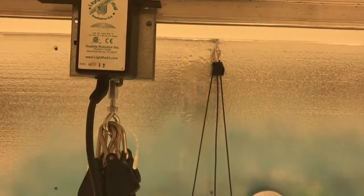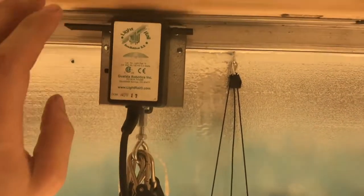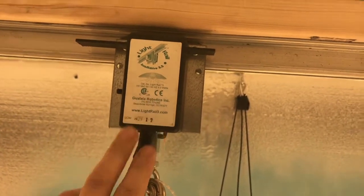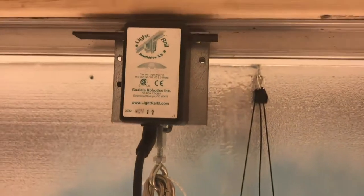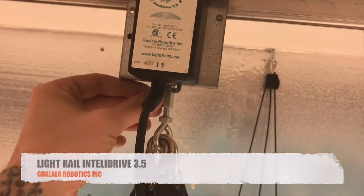Light rails are pretty simple. They have a lot of pros and cons to them. This is a Light Rail Intel Drive 3.5. I got this off of Amazon. I run two of them in this grow room and it's been running for like two years strong now, actually just about two years, and they're pretty impressive.